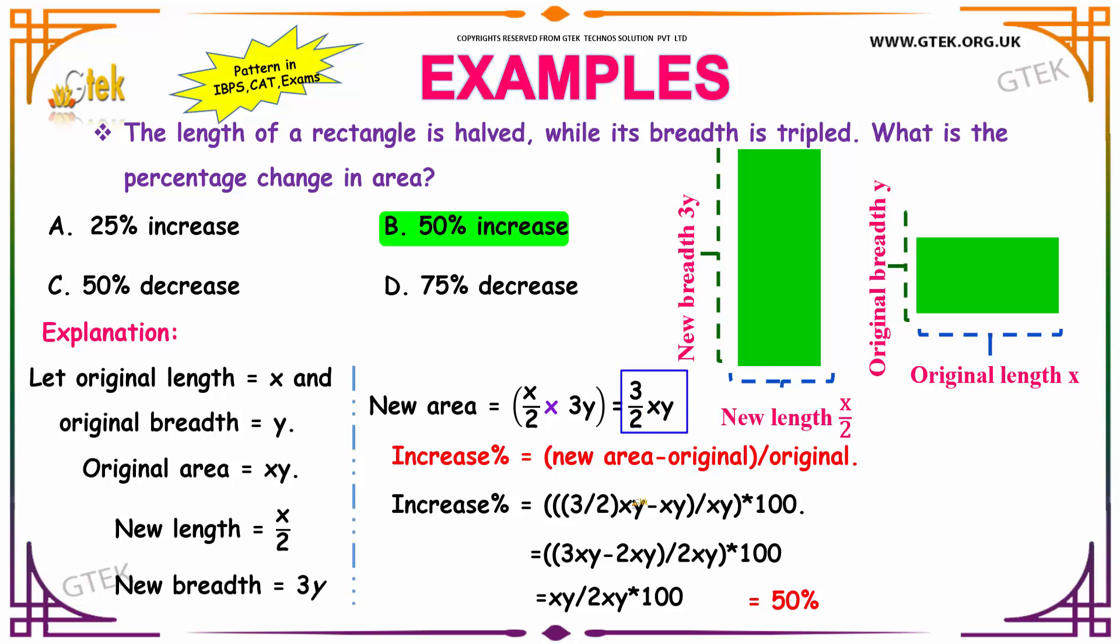To find the percentage increase in the area, we have to subtract our original area from the new area, divided by original area, and multiplied by 100. That gives you 3 by 2 xy minus xy divided by xy, multiplied by 100.